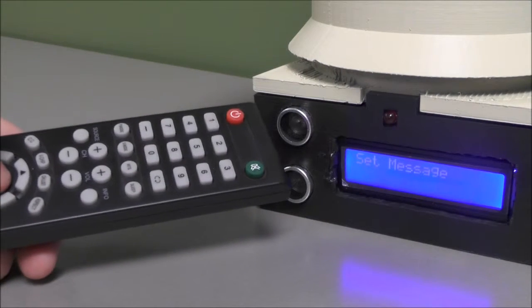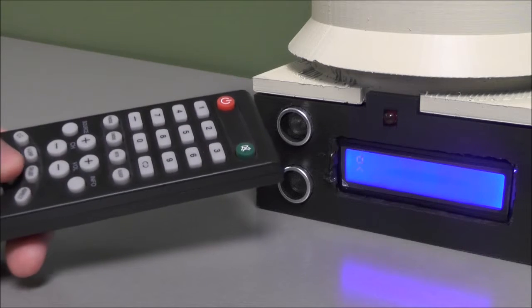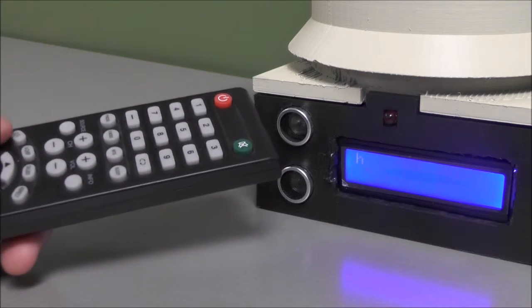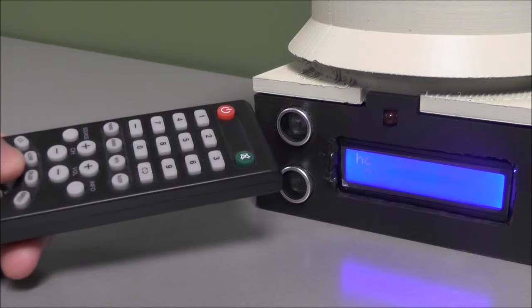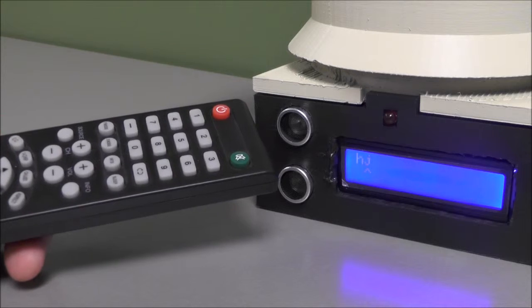The interface is navigated using a TV remote. Here, you can see I am using the setMessage function to customize the message string. Pressing the up or down arrows scrolls through the alphabet array, and pressing the side arrows moves the cursor left or right.